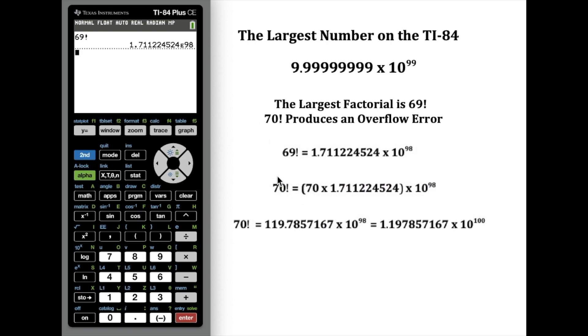For instance, if I wanted to do 70 factorial. Well, if I know 69 factorial is this, then I can take 70 times just the decimal portion of it. So 70 times that 1.711224524 number, and see what that is. That's 119.7857167.